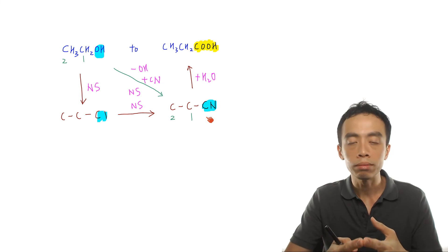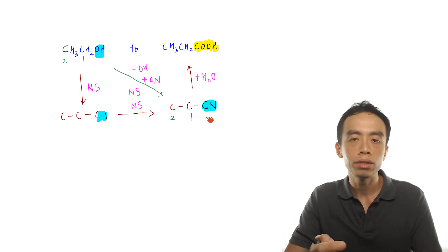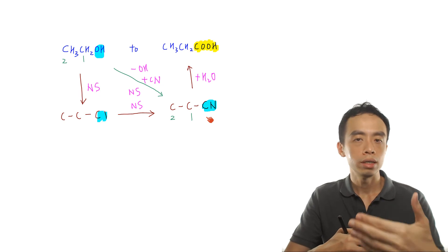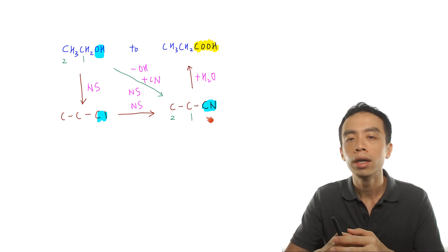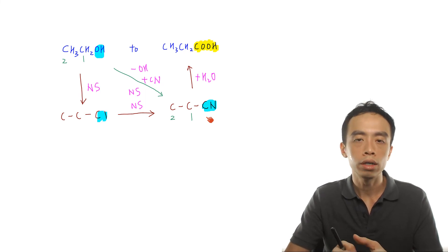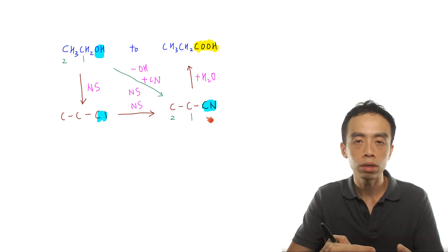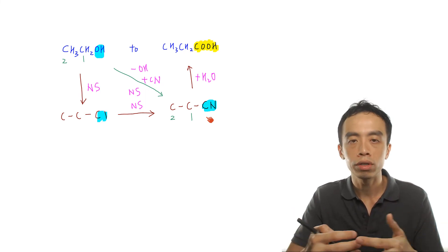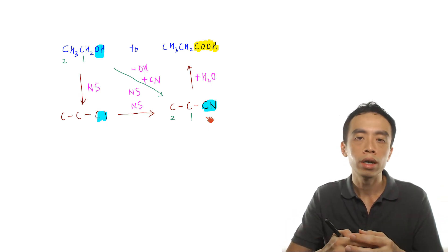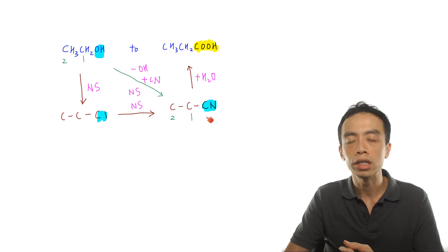Now for step-up processes, it is good to keep in mind that it is fairly rigid. The number of variations involving step-up processes is actually pretty limited, which makes it very predictable and easy to figure out. And in the syllabus for synthesis questions, the maximum number of steps required is four steps. So if we can figure out about two steps, which are more or less very predictable involving step-up reactions, then we just need to figure out the remaining one or two steps to work out the entire synthesis question.